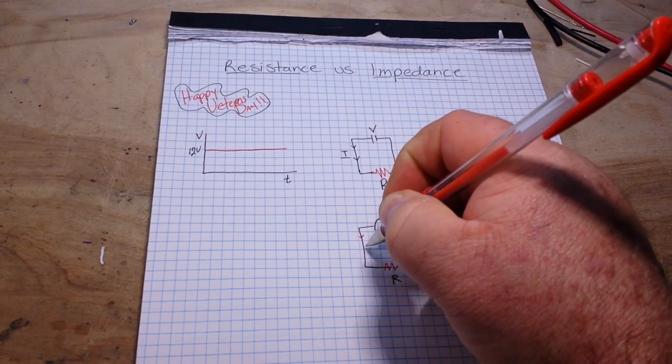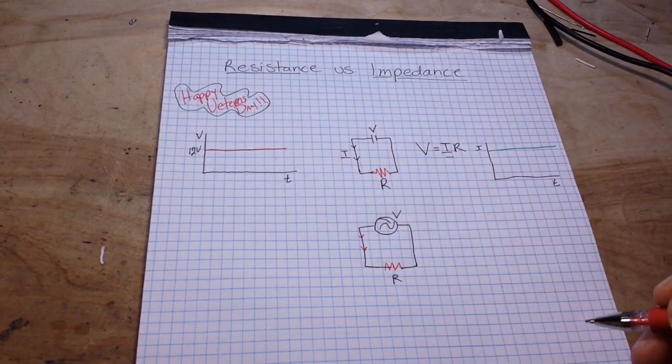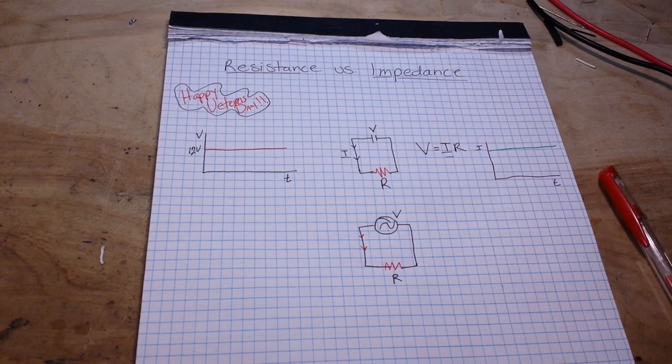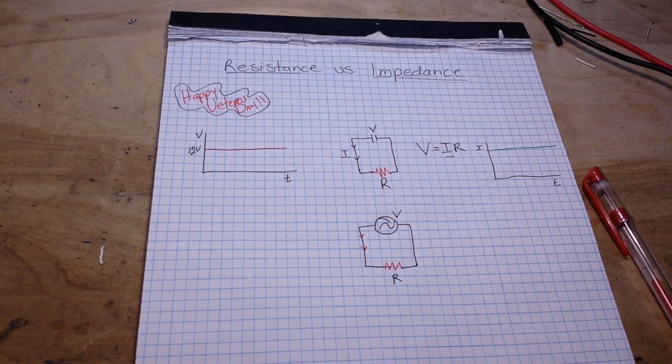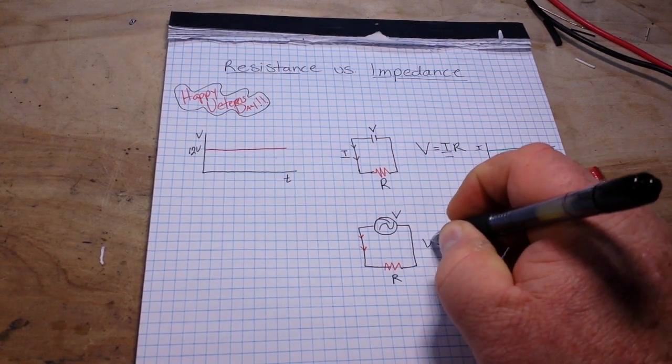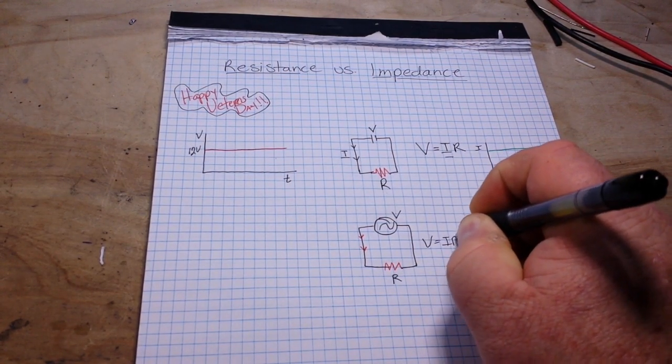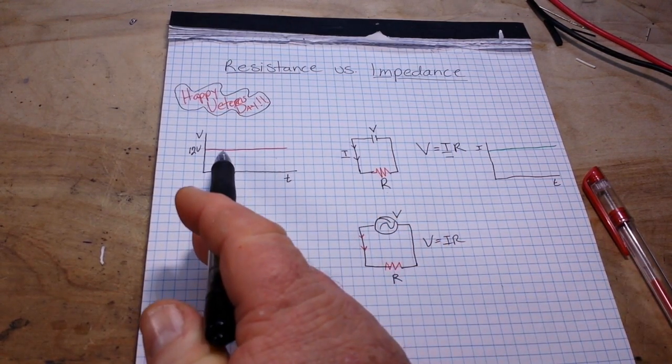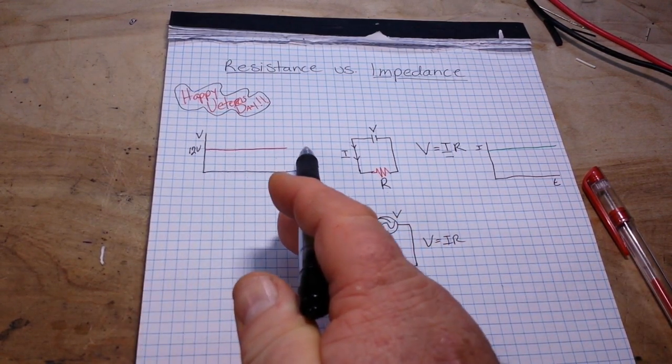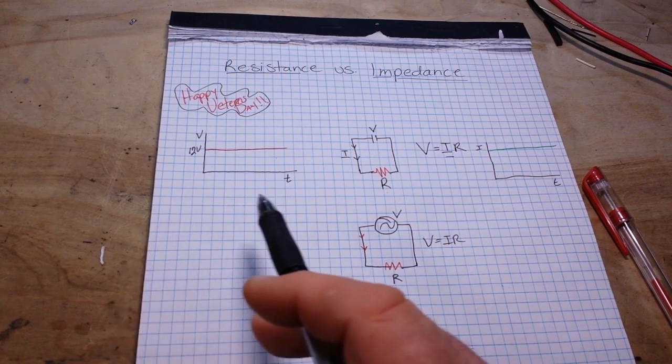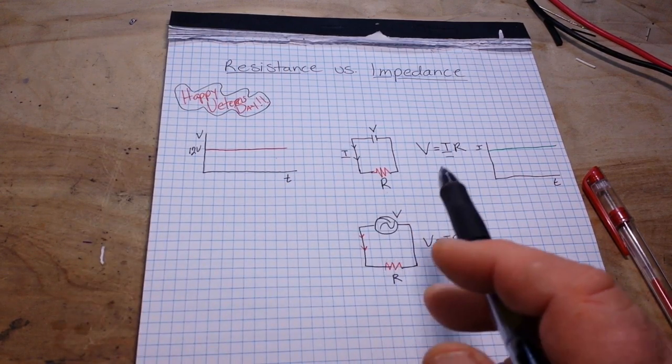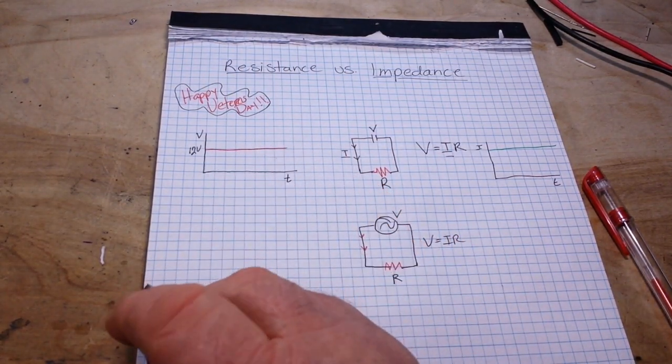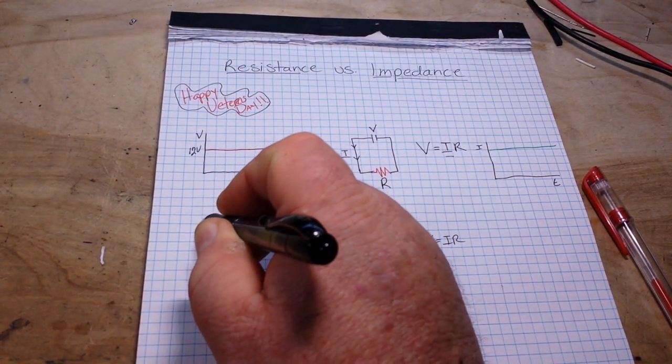Now some current is going to flow. But here's where things start to get different. Even though Ohm's Law still applies. Remember what we said about the DC circuit. The voltage remains constant. Things have changed now with the AC.